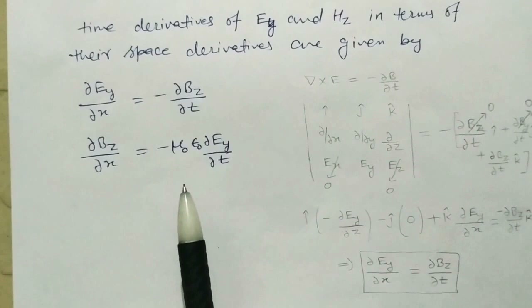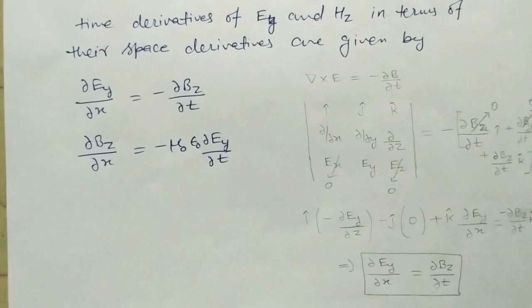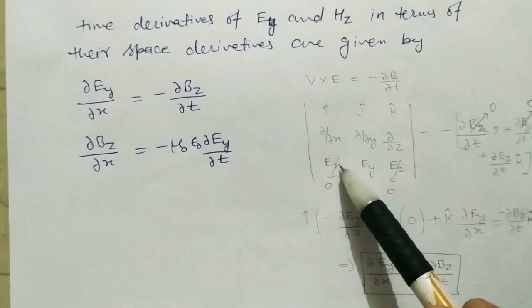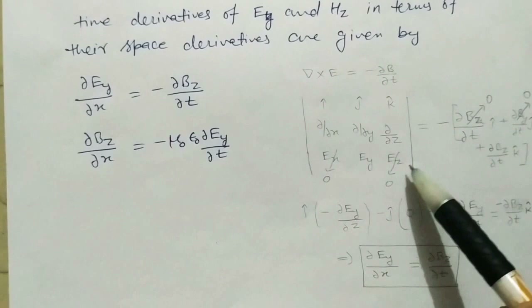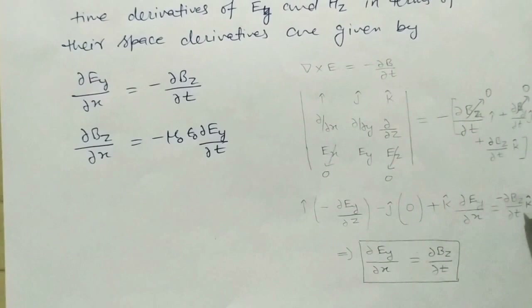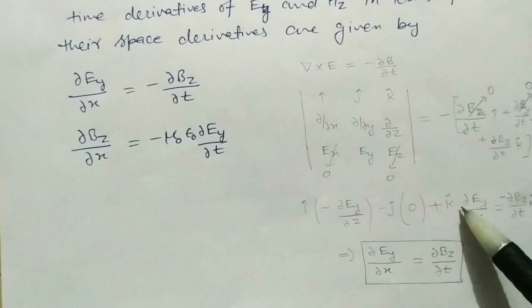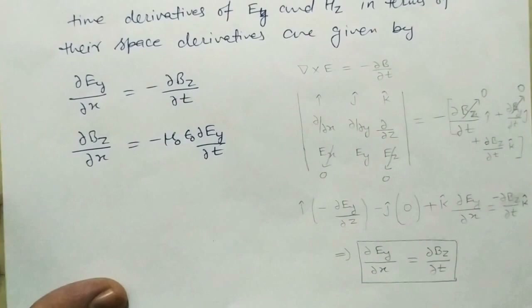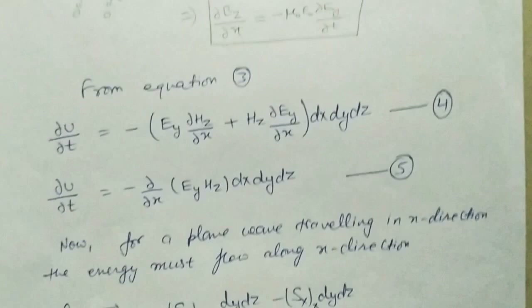If E is in the y-direction and B is in the z-direction, only then can the wave propagate in the x-direction. Therefore, the x-component of the electric field is 0, and the z-component is also 0. Similarly, the x-component and y-component of the magnetic field are both 0. Equating the i, j, and k components of this equation gives us the first relation. Then we look at the second equation from Maxwell's fourth equation.